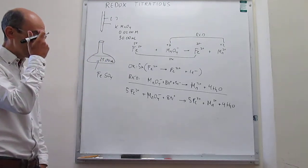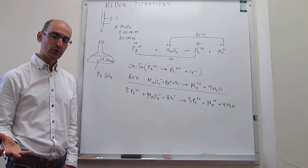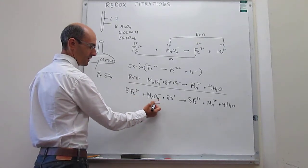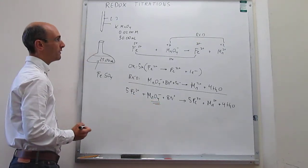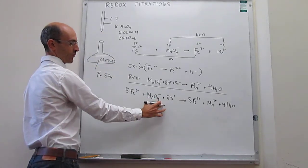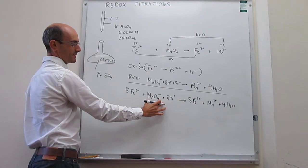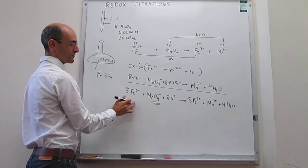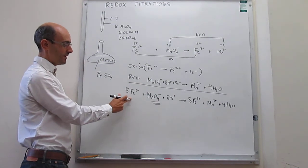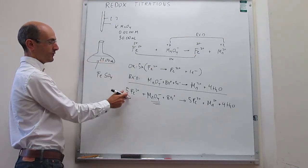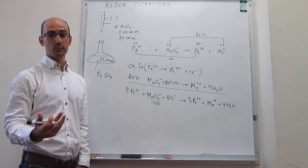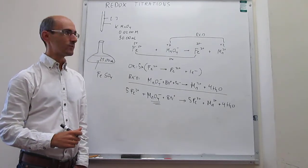Now we're ready to do the titration calculation. We know the volume and molar concentration of the permanganate solution, so we can find the number of moles of permanganate. Then, using the stoichiometric relationship, we can calculate the moles of iron(II). And because we know the volume of the iron sulfate solution, knowing the moles and the volume allows us to calculate the molar concentration. That's the answer to the problem.